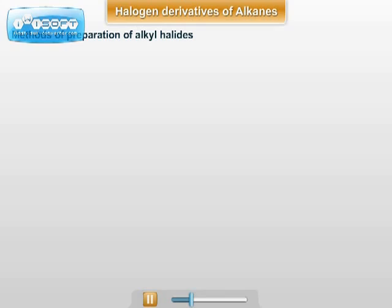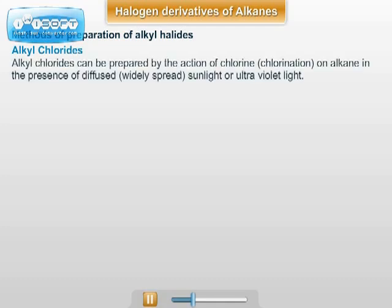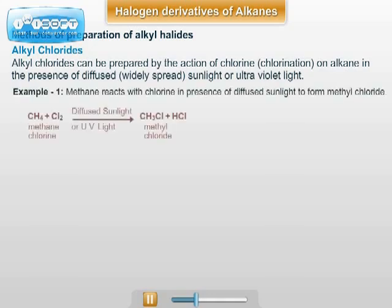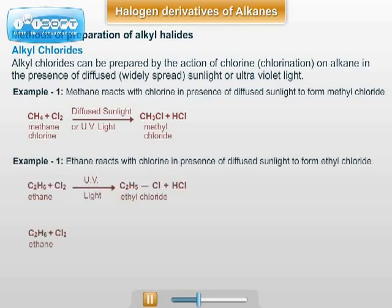Methods of preparation of alkyl halides. First: preparation of alkyl chlorides. Alkyl chlorides can be prepared by the action of chlorine on alkanes in the presence of diffused sunlight or UV light. This is known as halogenation, specifically chlorination of alkyl halides. For example, methane reacts with chlorine in the presence of diffused sunlight to form methyl chloride. Example two: ethane reacts with chlorine in the presence of diffused sunlight to form ethyl chloride.